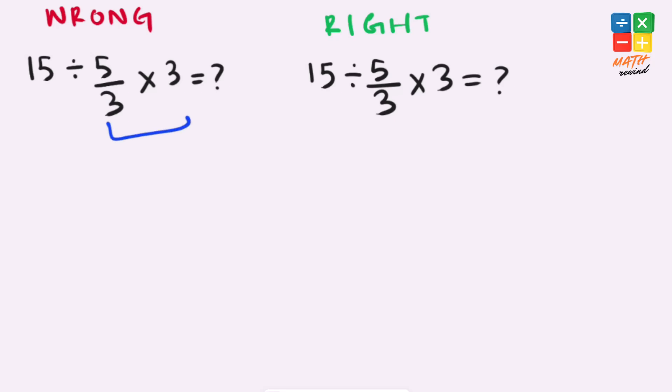First, we solve this part of the expression. We can cancel out 3 and 3 and gives us 5. 15 divided by 5 gives us 3. But this answer is not correct.